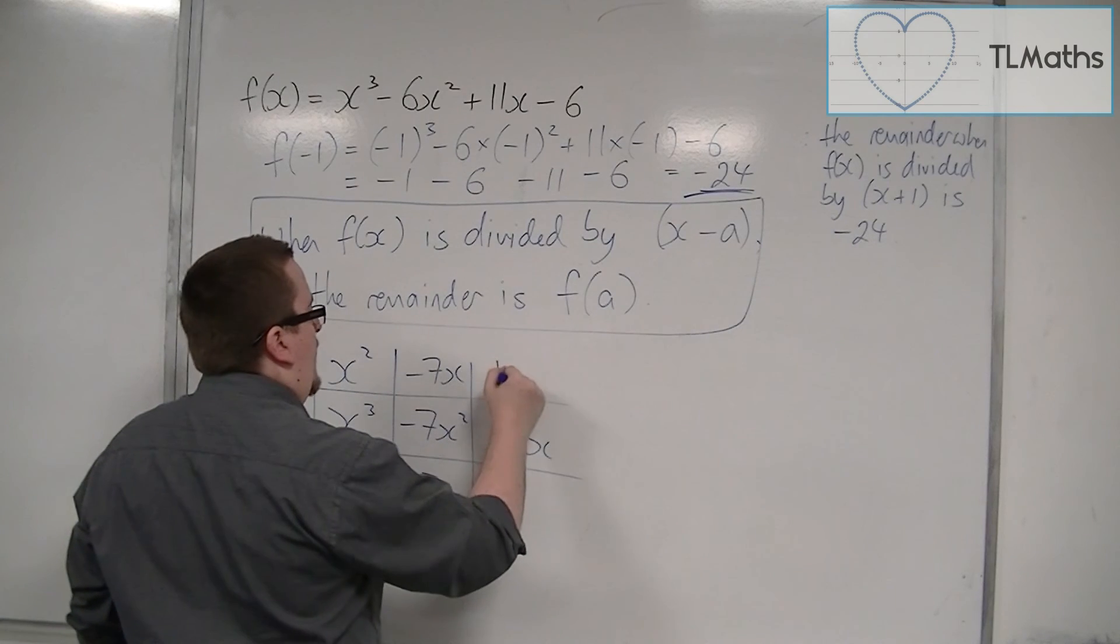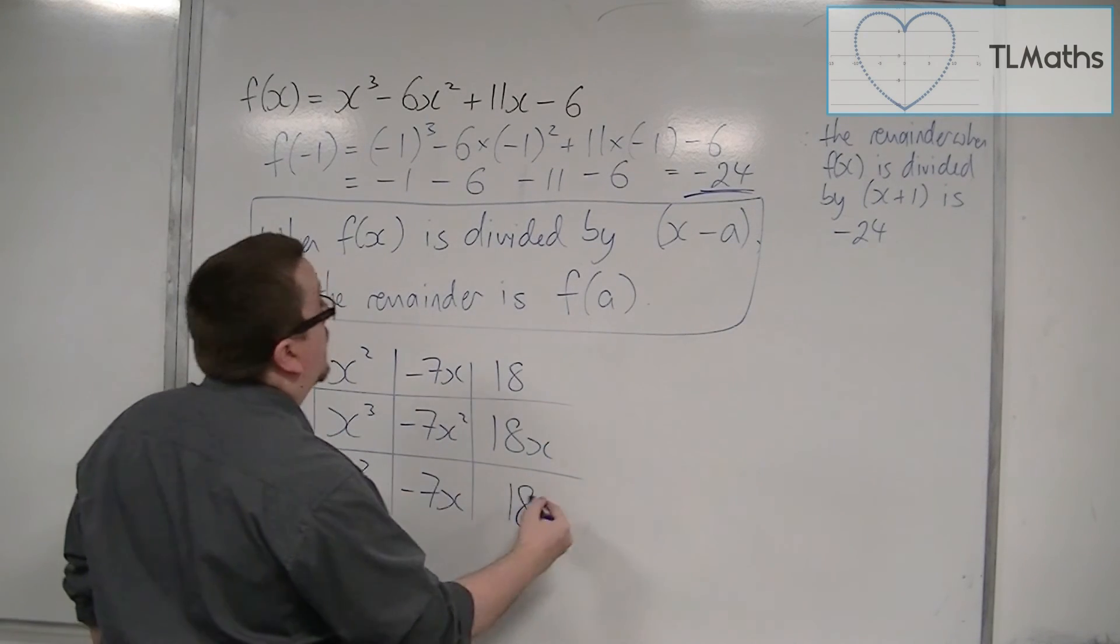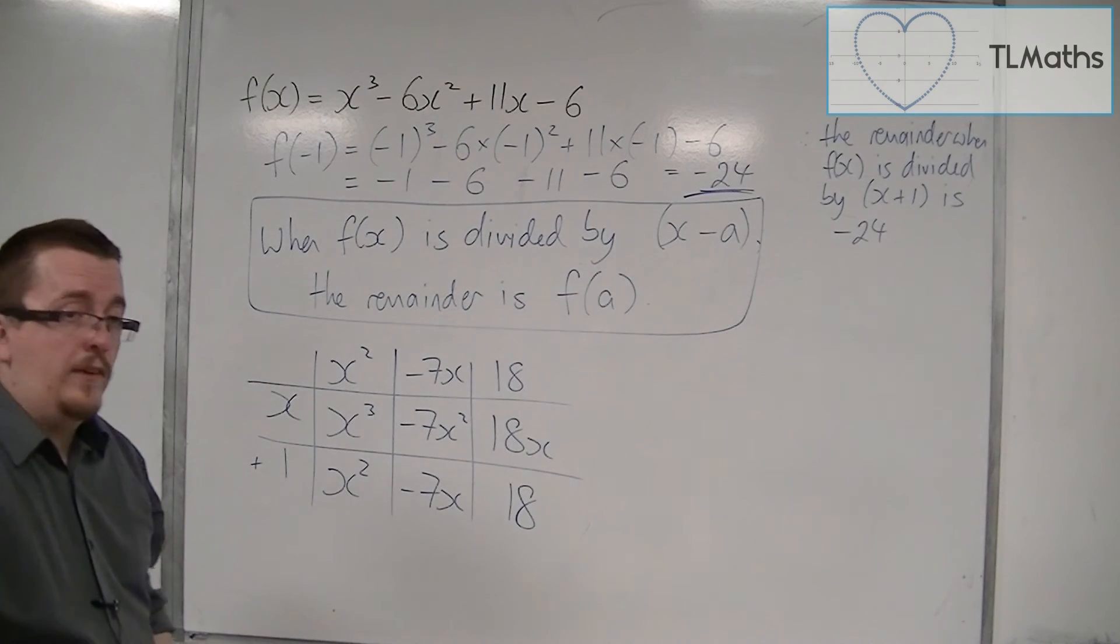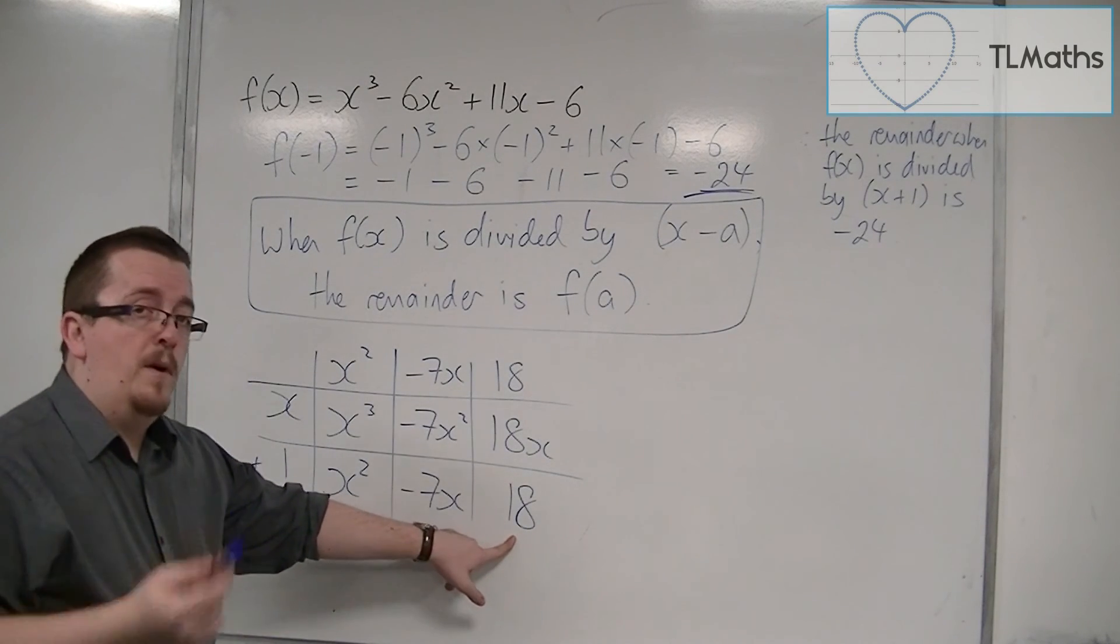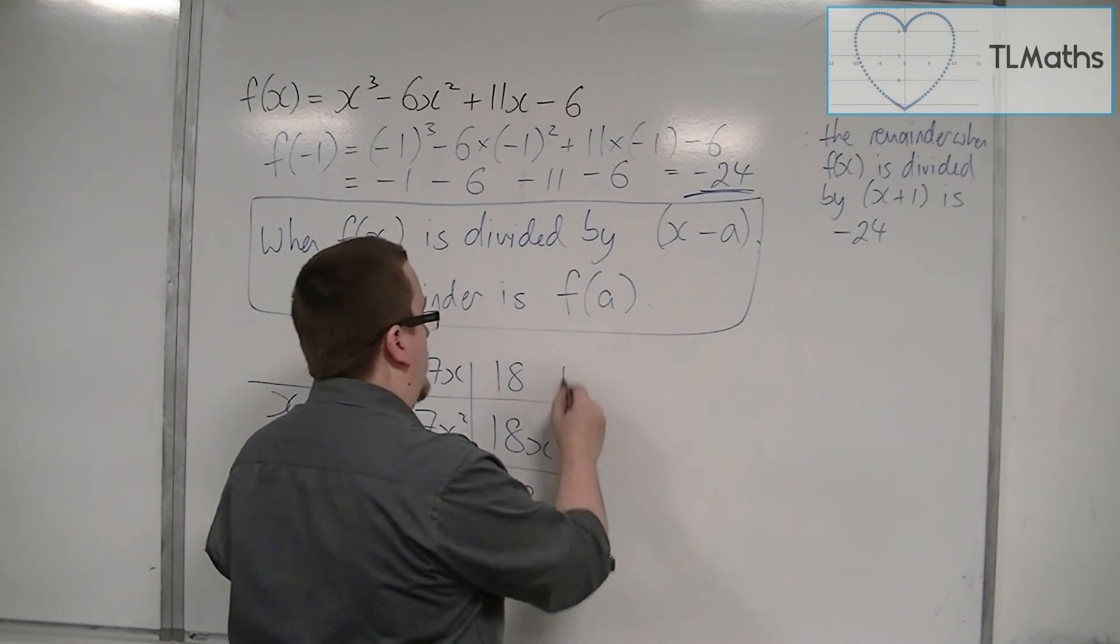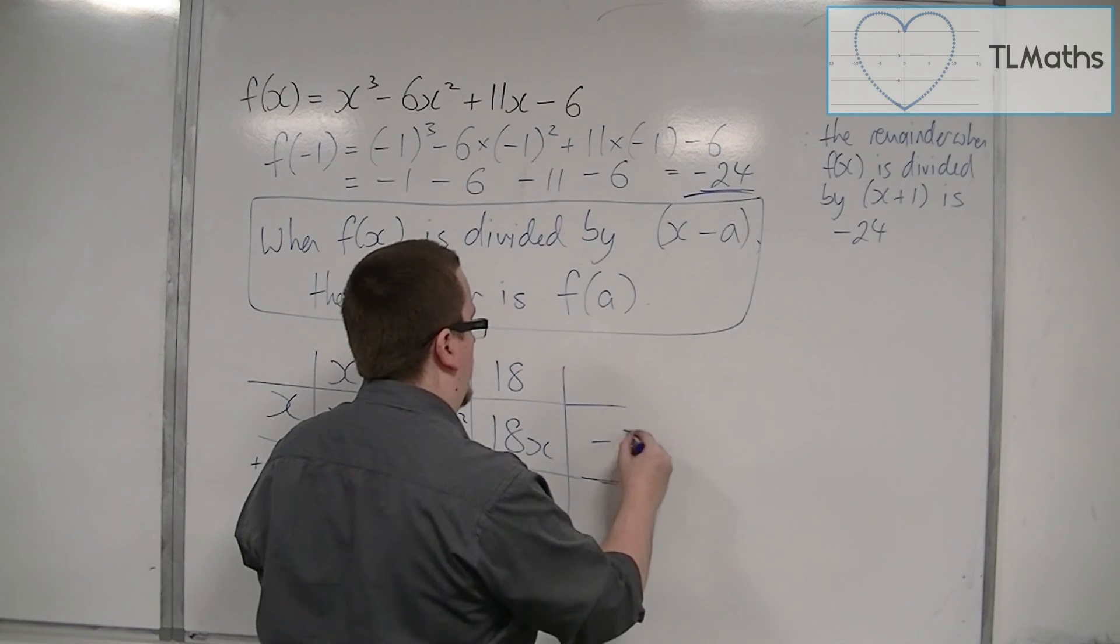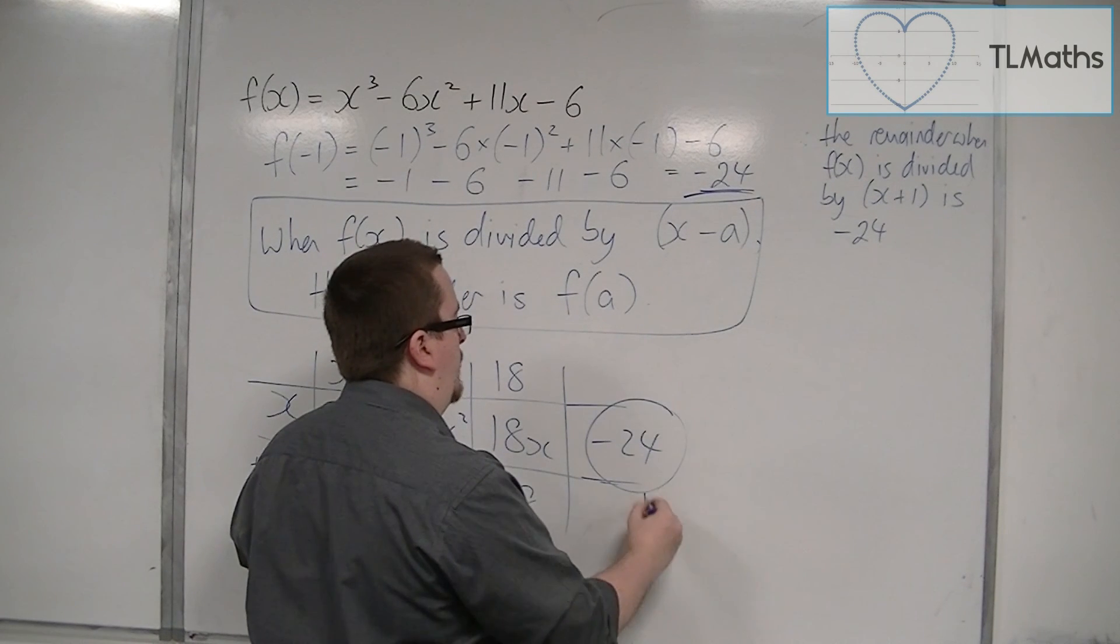18 times 1 is 18. I don't want 18, I want -6, so I've got to take away 24. And that is my remainder.